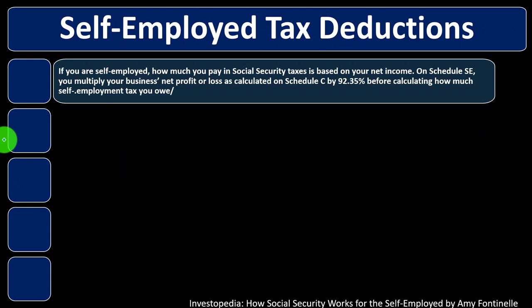If you are self-employed, how much you pay in Social Security taxes is based on your net income. If you have an option of being a W-2 employee or self-employed, it would seem like it's better to be an employee because you'd only pay 6.2% instead of 12.4%. But that's not necessarily the case because if you're a contractor, you get to deduct all these business expenses and you're only being taxed on net income, not gross income. On Schedule SE, you multiply your business net profit or loss as calculated on Schedule C by 92.35% before calculating how much self-employment tax you owe.